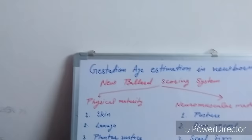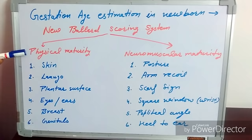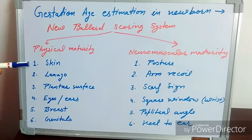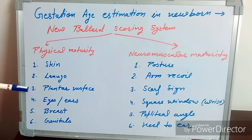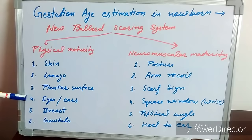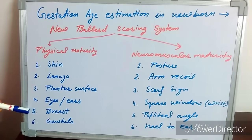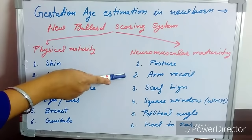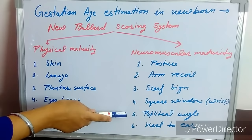In the Ballard scoring system, there are 6 physical maturity scores and 6 neuromuscular maturity scores. For physical maturity, we examine skin color and texture, lanugo hair density, creases over the plantar surface, eyes and ears for cartilage, breast bud and nipple, and genitals. For neuromuscular maturity, we assess posture in supine position, arm recoil, scarf sign, square window test at the wrist, popliteal angle, and heel to ear test.